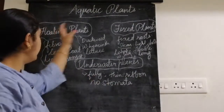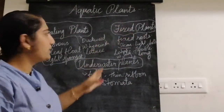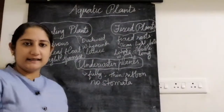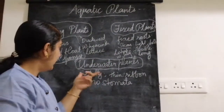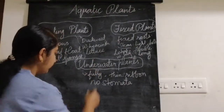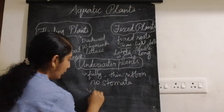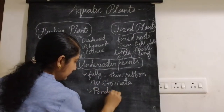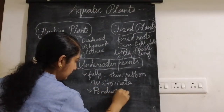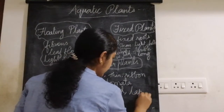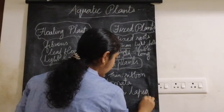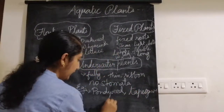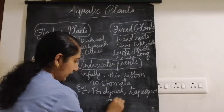The examples of underwater plants are pond weed, tape grass, and hydrilla.